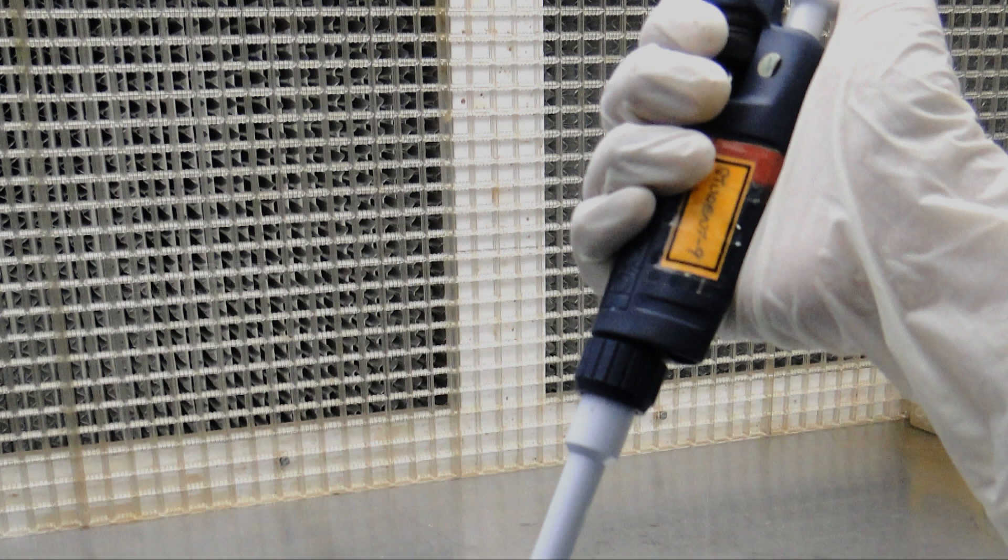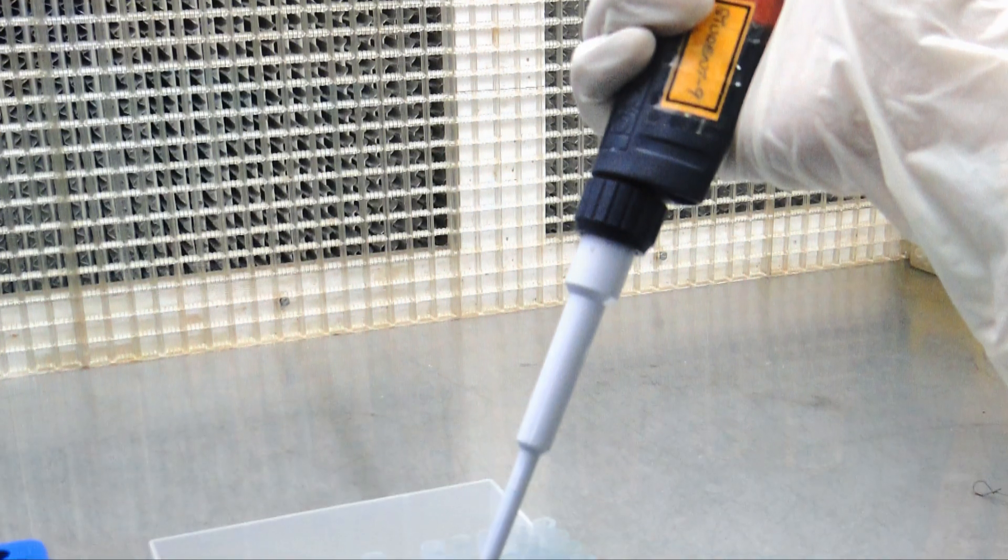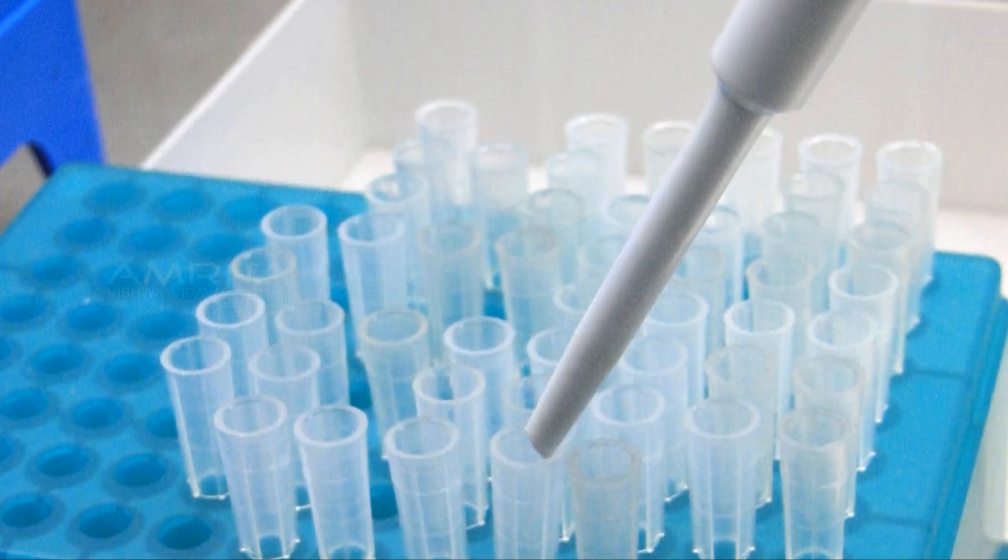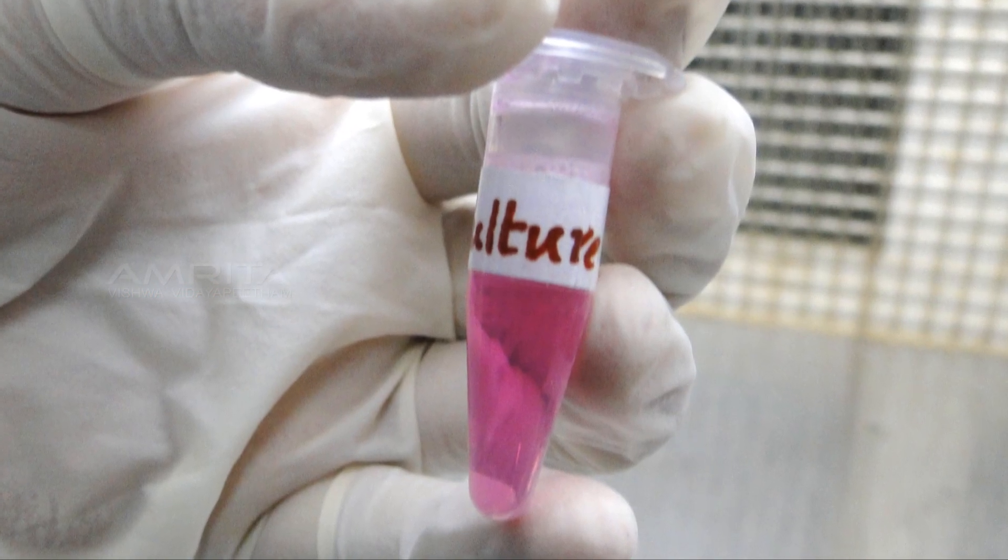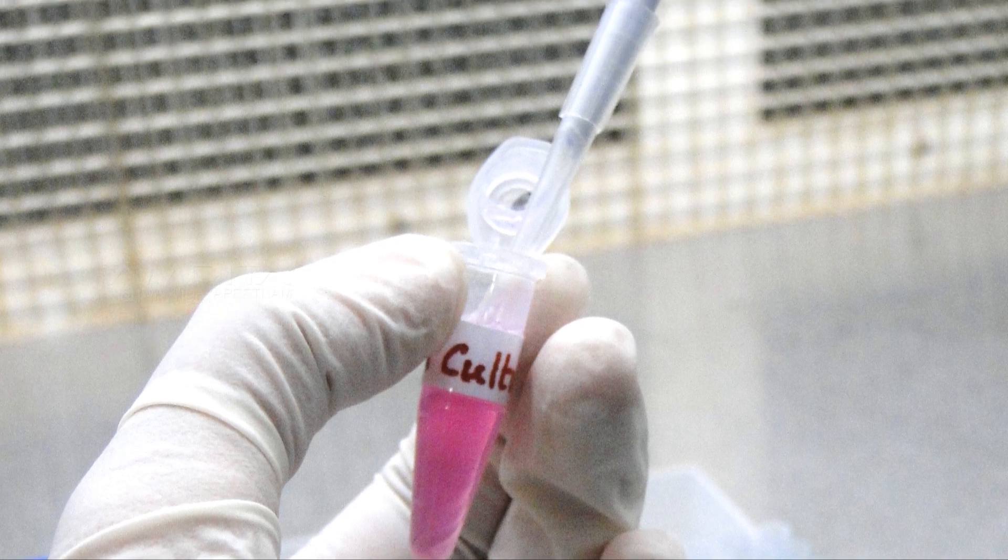Procedure: Set the micro pipette scale to 10 microliters. Insert a new micro pipette tip to the micro pipette. Take the vial containing uniform cell suspension, open it, and mix it 2-3 times with the micro pipette.